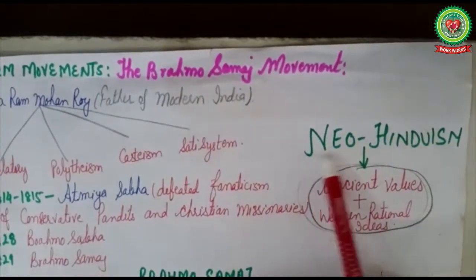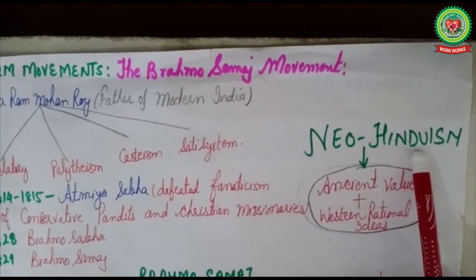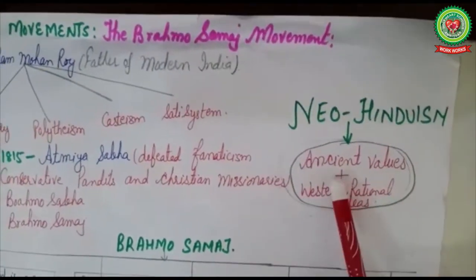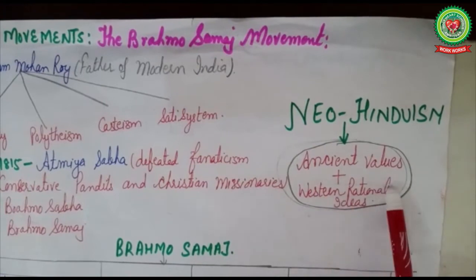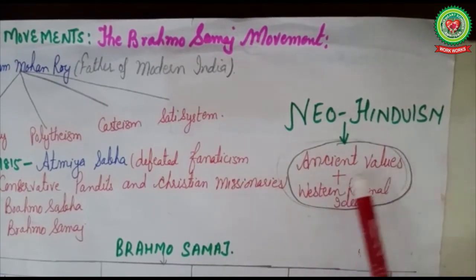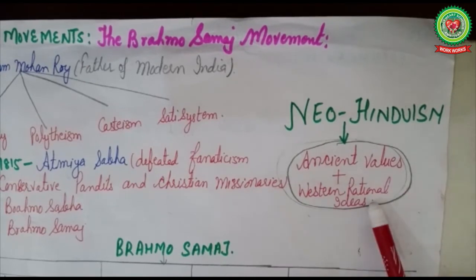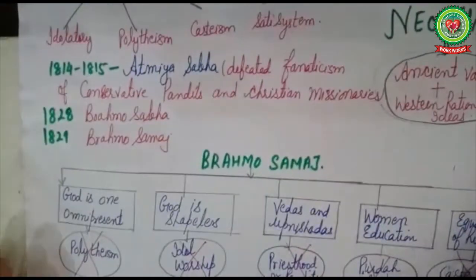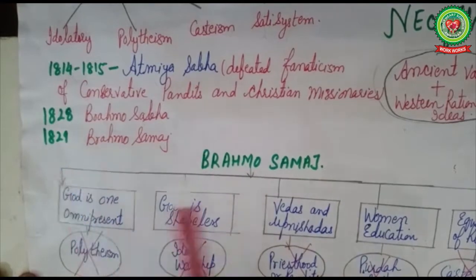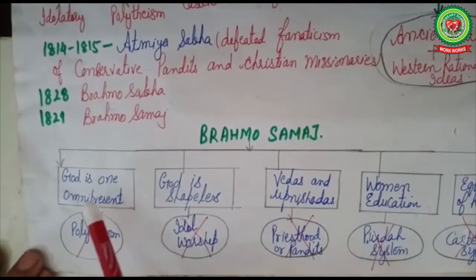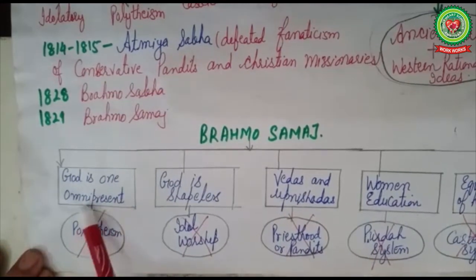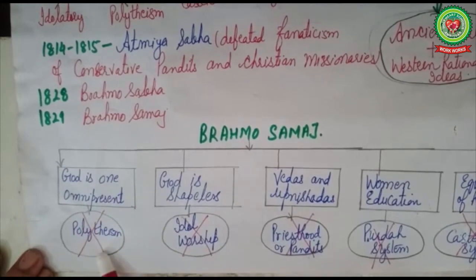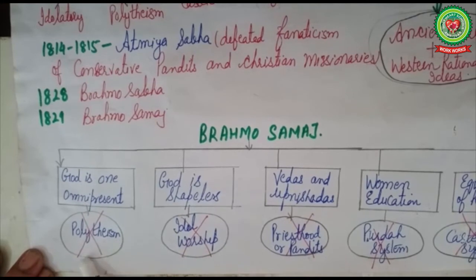In 1828 he set up Brahmo Samaj Sabha, which in 1829 came to be known as Brahmo Samaj. His policy was to establish Neo-Hinduism — a belief in the amalgamation of ancient values and western rational ideas. Through Brahmo Samaj he propagated that God is one and omnipresent — present everywhere. By saying God is one and omnipresent, he denounced the idea of polytheism.